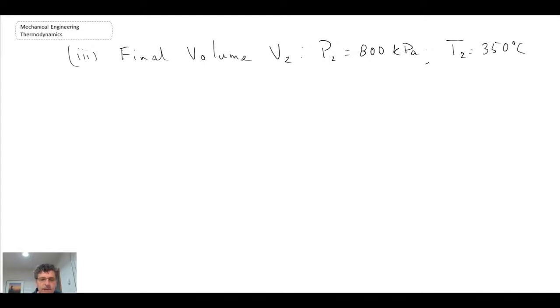Well, remember earlier we said that we were in the superheated region. So we go back into our tables and we look under superheated water. And from that we can then determine, we'll find a table at a pressure of 0.8 MPa, and then we look for 350 degrees Celsius.